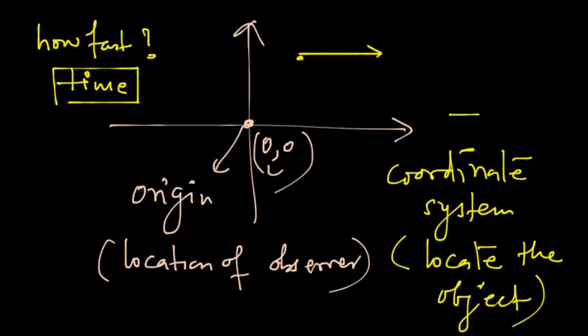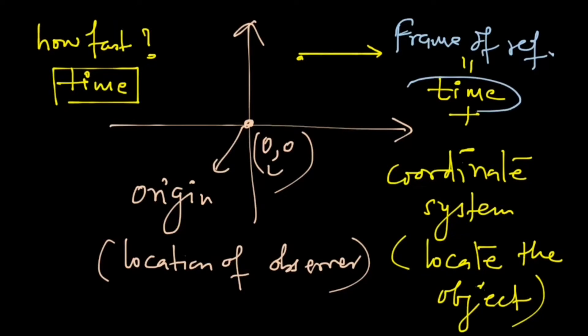So there is another variable included that is time. So coordinate axis plus time is what we call the reference system or the frame of reference. So what is a frame of reference? It is a time, that is a clock, attached to a coordinate system.